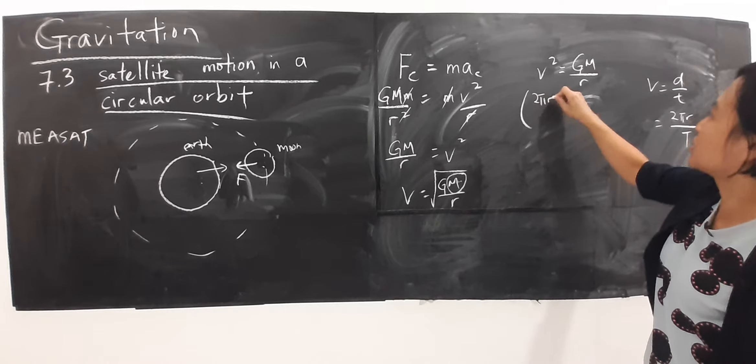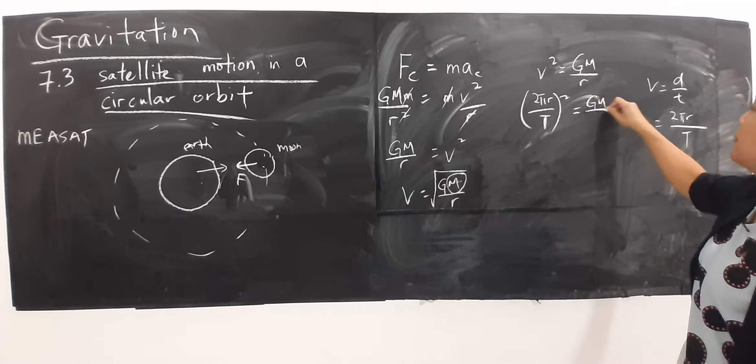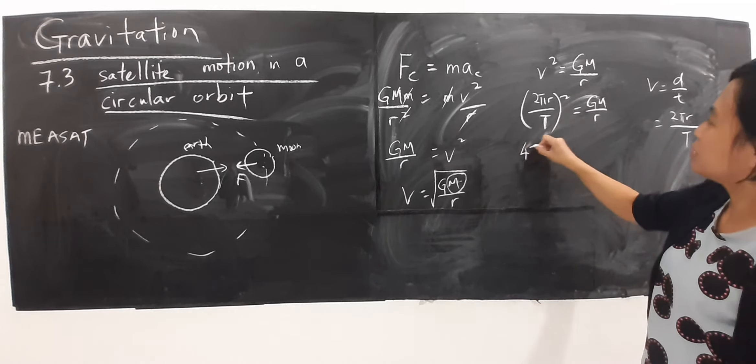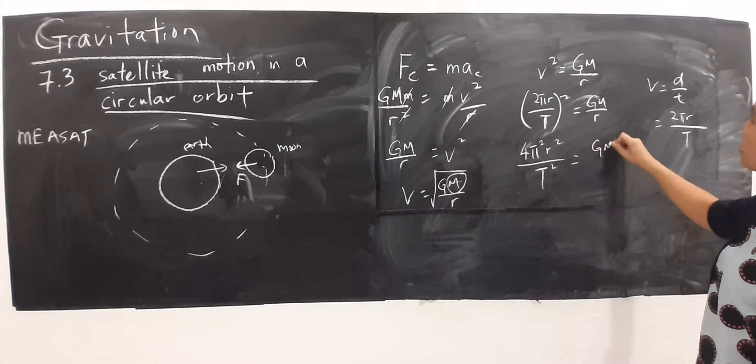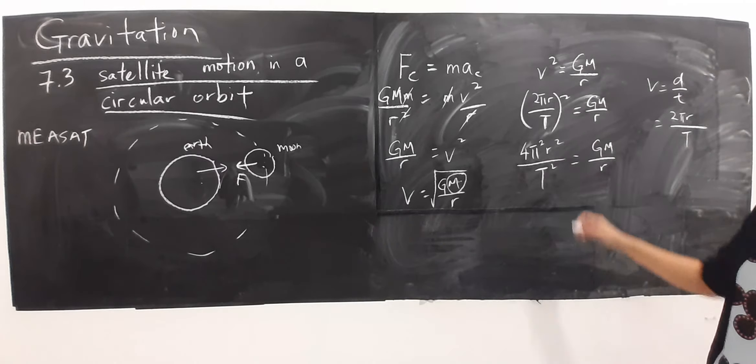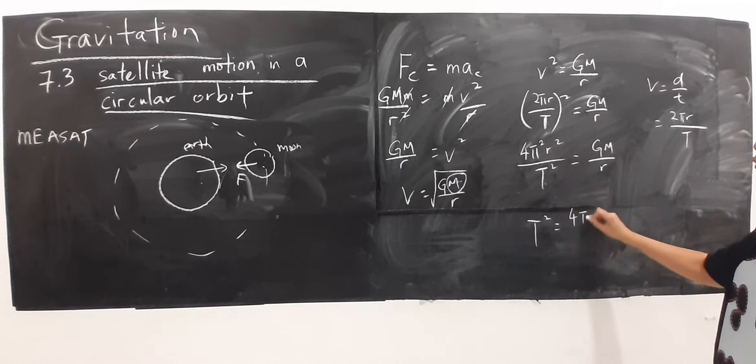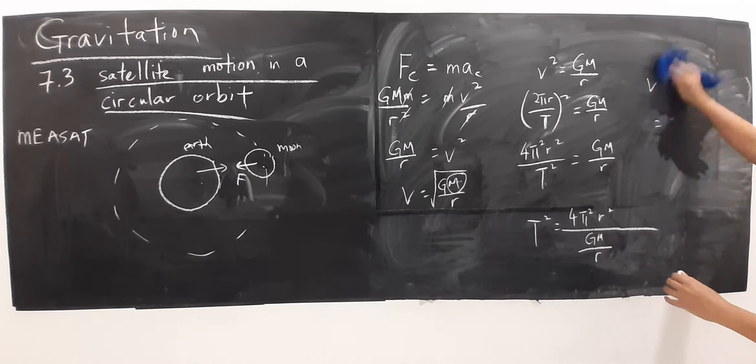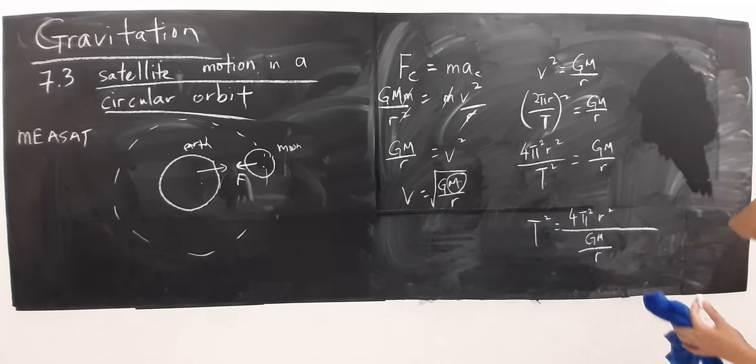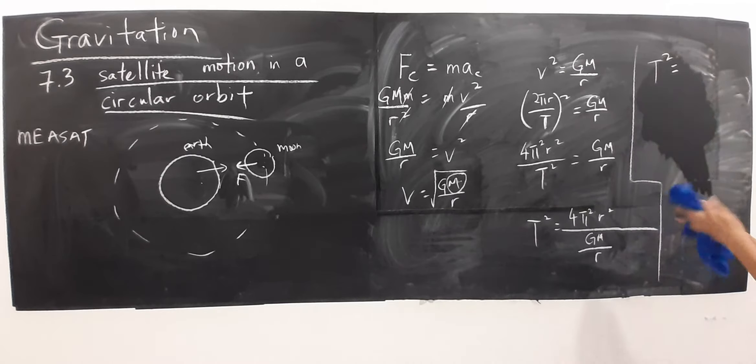So I'm going to use this. Sebab kita nak cari period, capital T. So what do I do? Need them kembangkan dulu. Dia ada R square, dia kena jadi T square. Sama juga dengan ni. So what I want, T. So what do I do? Pindahkan 4 pi square R square ke sebelah kanan. So what do I have? Saya ada ni. Sampai sini, apa yang saya nak buat? Ini bahagi G M, kan. Jadi kalau saya nak buat darab, apa yang saya kan buat?